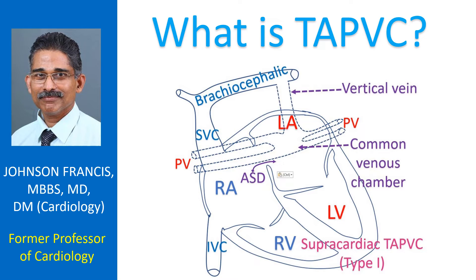TAPVC stands for Total Anomalous Pulmonary Venous Connection. It is also known as TAPVD or Total Anomalous Pulmonary Venous Drainage. Normally, pulmonary veins join the left atrium. When all pulmonary veins drain to the right atrium through one of the blood vessels leading to it, it is known as TAPVC. If only some of the four pulmonary veins join the right side of the heart, it is called PAPVC or Partial Anomalous Pulmonary Venous Connection.